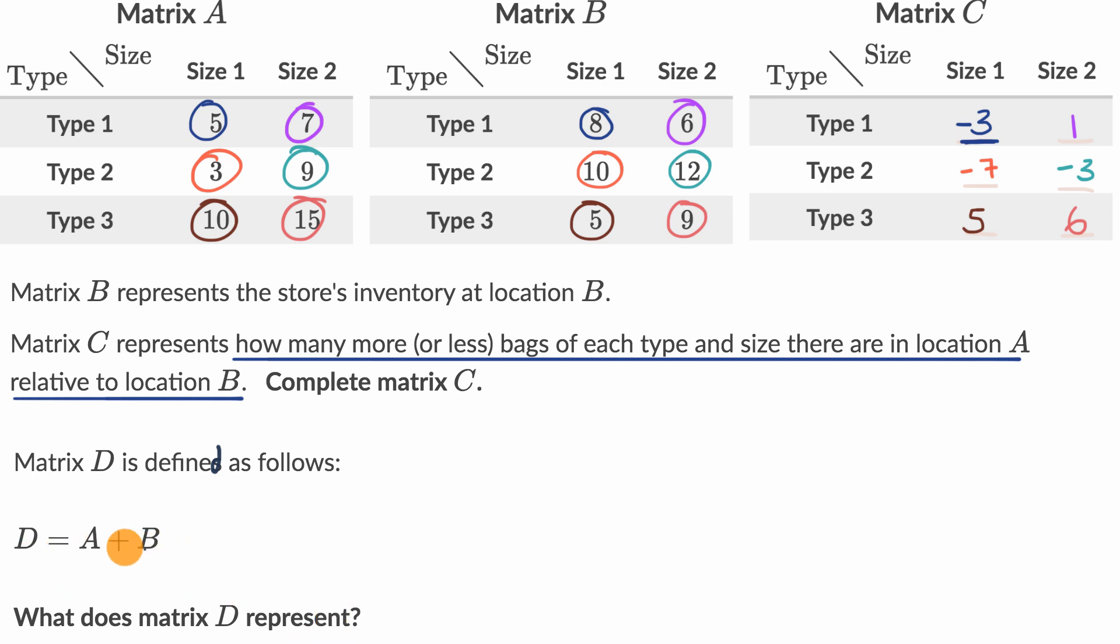They're not asking us to calculate A plus B, not asking us to add the matrices, but you know how to do it. You would add the corresponding entries. But what does D represent? Well, if you add the corresponding entries, this is the inventory of store A, this is the inventory of store B. So if you were to add them, the matrix D would tell you the combined inventories of A and B for each of the types and sizes.